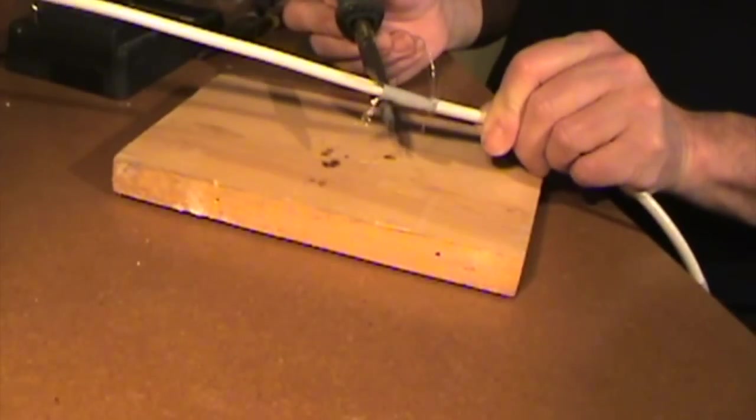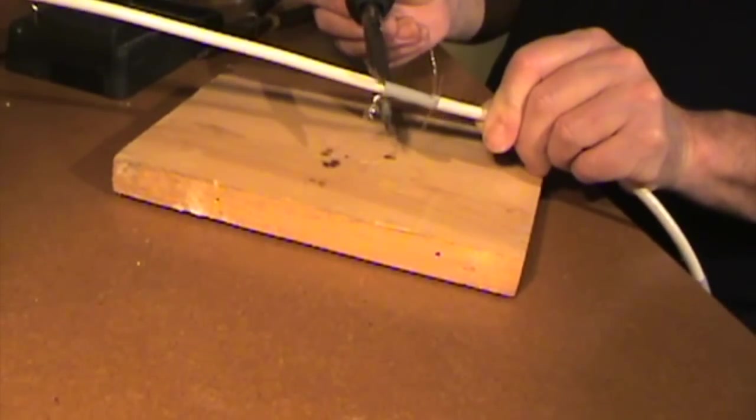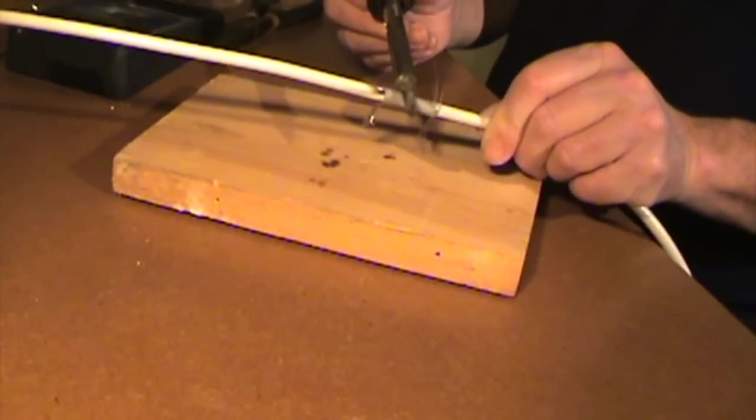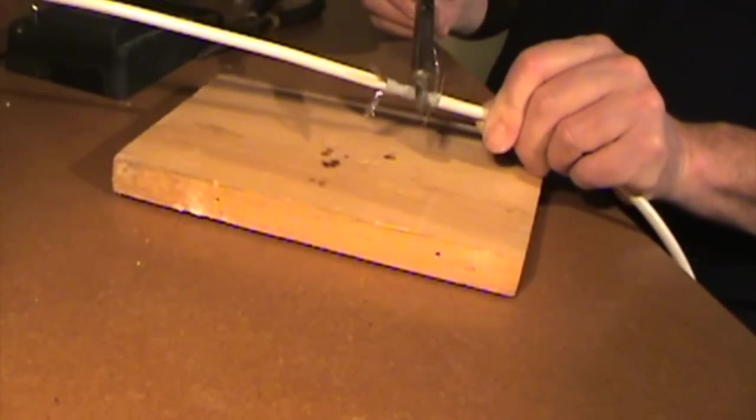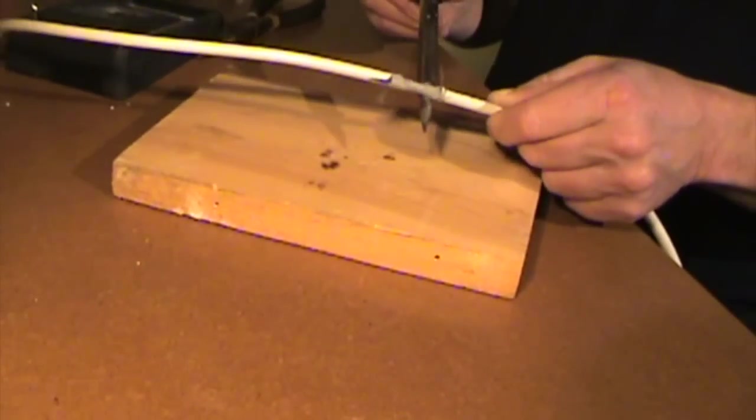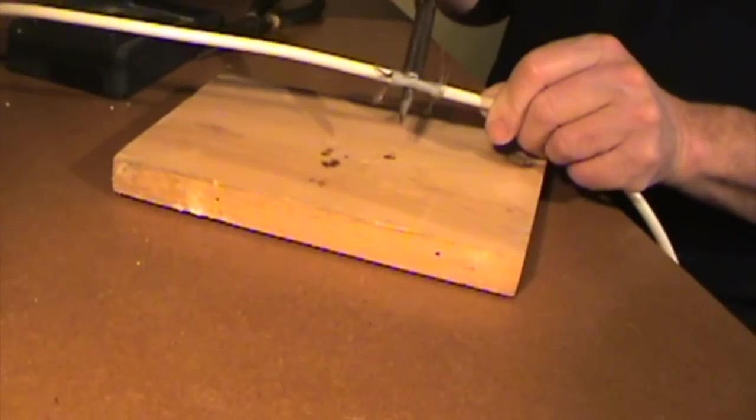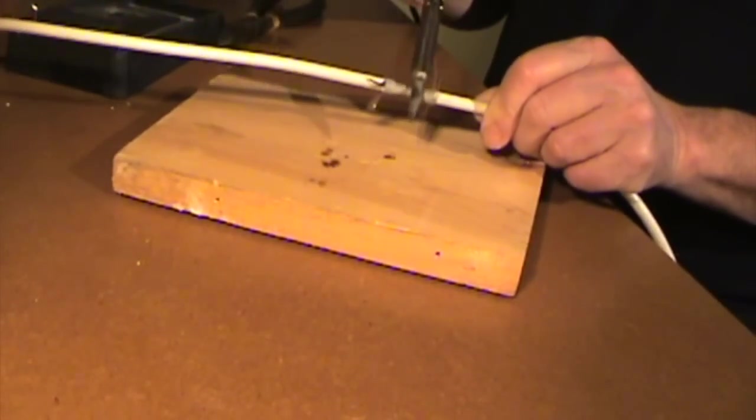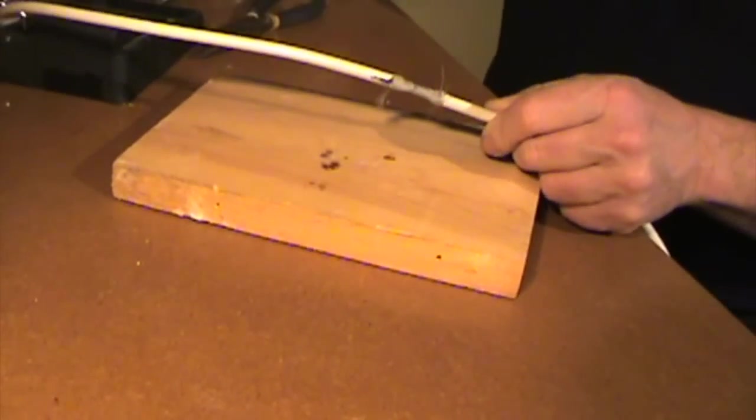Using the soldering iron, I just move it back and forth on it and it shrinks it right up nice and tight. You don't want to linger in one spot because you'll end up burning it, but if you just slide it along, it'll tighten up nice and you'll have a good solid shrink connection.